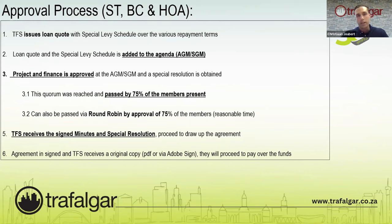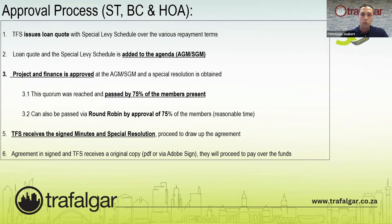Once we receive the signed minutes and special resolution, we can draw up the loan agreement. Once the agreement is signed and we receive the original copy, we can process payment of funds either to the body corporate or directly to the service provider. It's important to note that we would like to vet the service provider — it's extremely important that a qualified solar provider does the installation, given the quantum's involved.